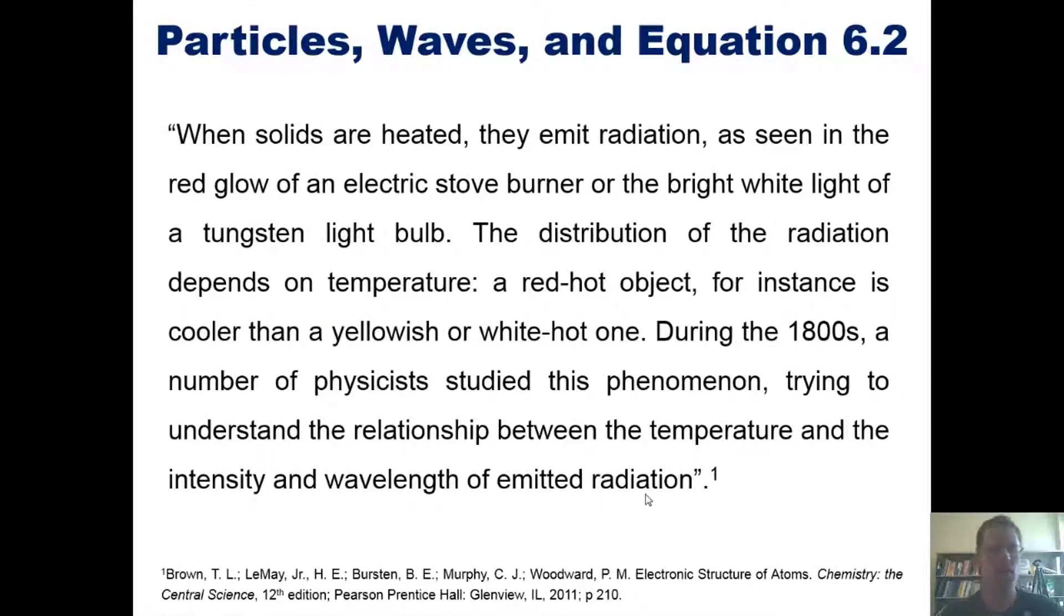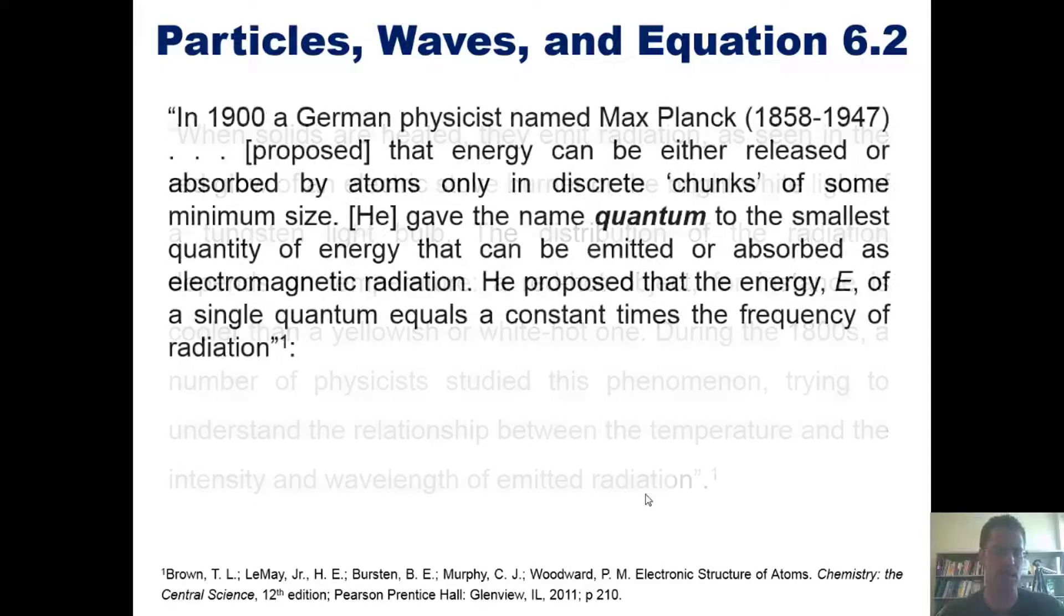Quote: When solids are heated, they emit radiation, as seen in the red glow of an electric stove burner or the bright white light of a tungsten bulb. The distribution of the radiation depends on temperature. A red hot object, for instance, is cooler than a yellowish or white hot one. During the 1800s, a number of physicists studied this phenomenon, trying to understand the relationship between the temperature and the intensity or wavelength of the emitted radiation.